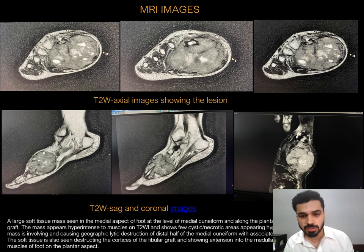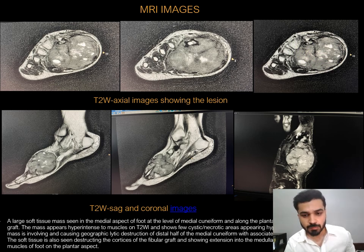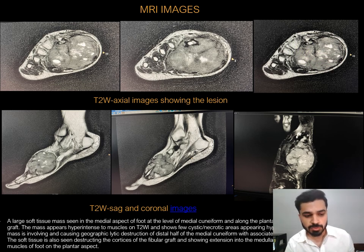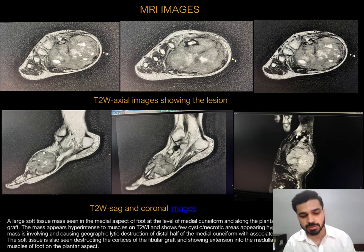On axial, sagittal, and coronal MRI images of the right foot, a large soft tissue mass is seen in the medial aspect of the foot at the level of the medial cuneiform, along the plantar, medial, and lateral aspect of the fibular graft. The mass appears hyperintense to muscles on T2-weighted images and shows few cystic and necrotic areas appearing hyperintense on T2. The soft tissue is causing geographic lytic destruction of the distal half of the medial cuneiform with associated expansion and cortical destruction, and is also seen destructing the cortices of the fibular graft with extension into the medullary cavity. There is marked splaying of the muscles of the foot on the plantar aspect.